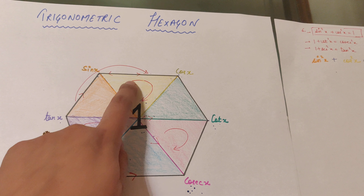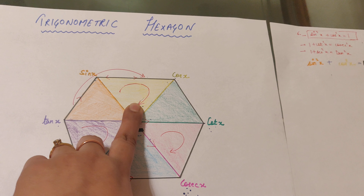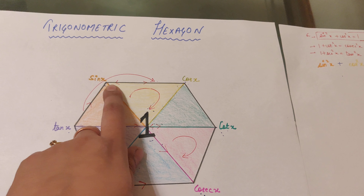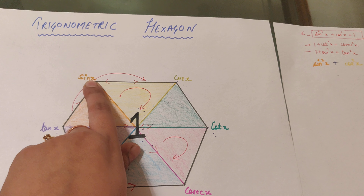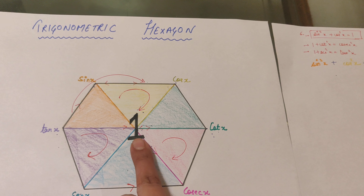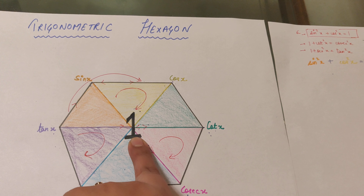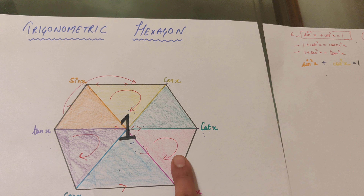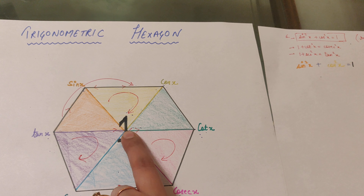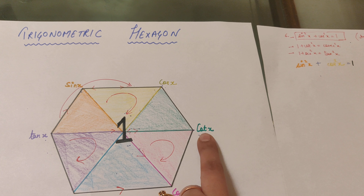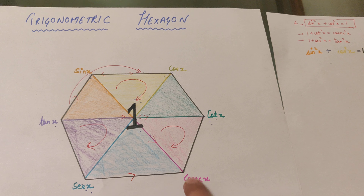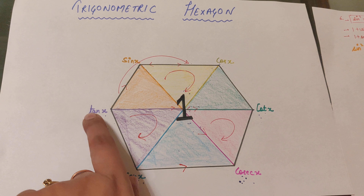The fifth identity is the reciprocal identity along the diagonal: sin x · csc x = 1, or equivalently sin x = 1 / csc x. Similarly, tan x = 1 / cot x, and cos x = 1 / sec x. So along the diagonal we get these reciprocal identities.